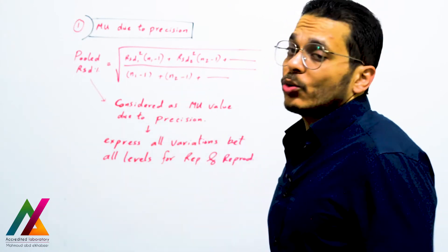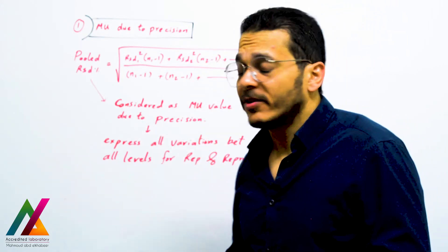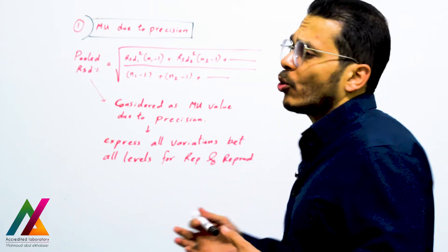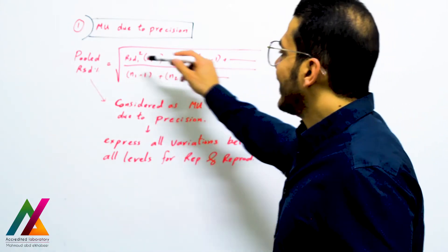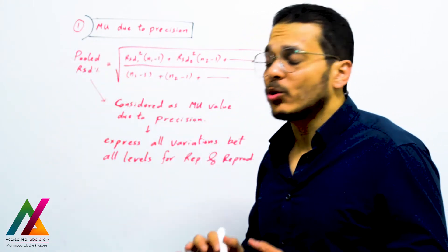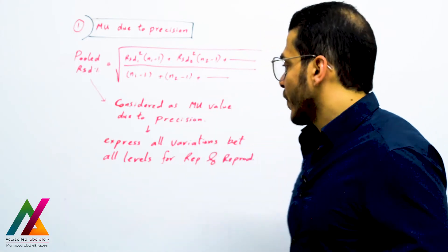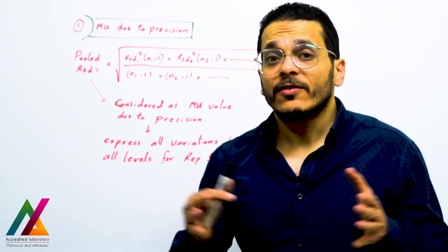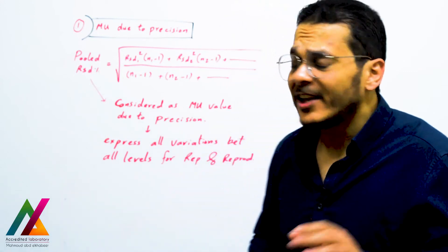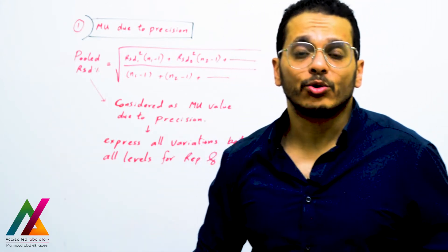From these relative standard deviations you calculate the pooled relative standard deviation, equal to the square root of: (RSD1² × (n1−1) + RSD2² × (n2−1) + ...) divided by the sum of the degrees of freedom for all levels. This pooled relative standard deviation is considered the measurement uncertainty value due to precision, because it expresses all variations coming from every step of measurement at both short and long time scales, covering repeatability and reproducibility.